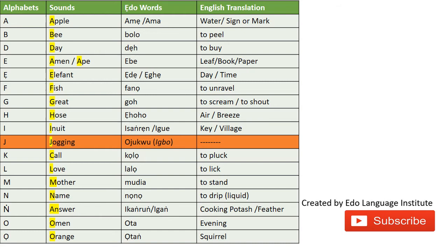For instance, the Igbo name 'OJUKWU' is something that every EDO person can pronounce, even though we don't have the J alphabet in our language. For the K sound, we have 'KOLO' — not to be mistaken with 'KOLO' meaning crazy, which every Nigerian knows. 'KOLA' means to pluck.